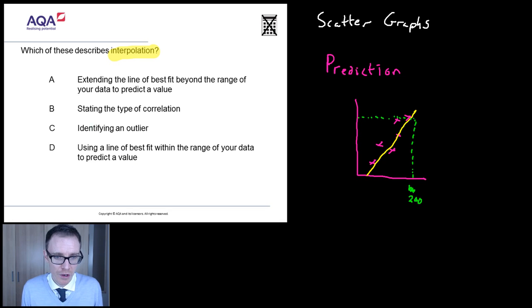So, is that one of these? Extending? No, no, no. Here it is. Using a line of best fit within the range of your data to predict a value. So, D is going to be the right answer. Now, why are they saying that bit? Within the range of your data? Well, that's going to lead us to now start to investigate some of the other things.